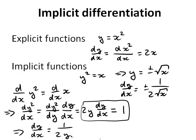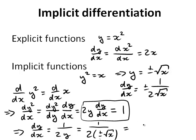But then you might say, what has this got to do with explicit differentiation — why is the answer not the same? Well, in fact, it actually is. Because y is actually plus or minus the square root of x, we can replace y here by plus or minus the square root of x. If we rewrite this in a slightly different way, we get plus or minus 1 over 2 root x, which is exactly what we calculated when we started with the explicit function.